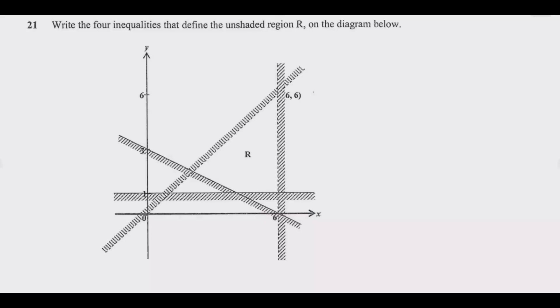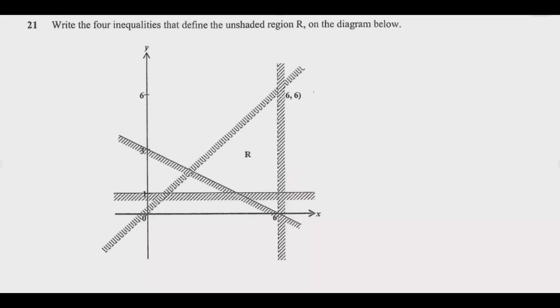Let us look at question 8.21: write the four inequalities that define the unshaded region on the diagram below. This question always comes and it's usually question 8.21, carrying five marks. Once you understand the principle behind it, those five marks become a free mark — before you even enter the exam you know you're going to get them. So follow me step by step.